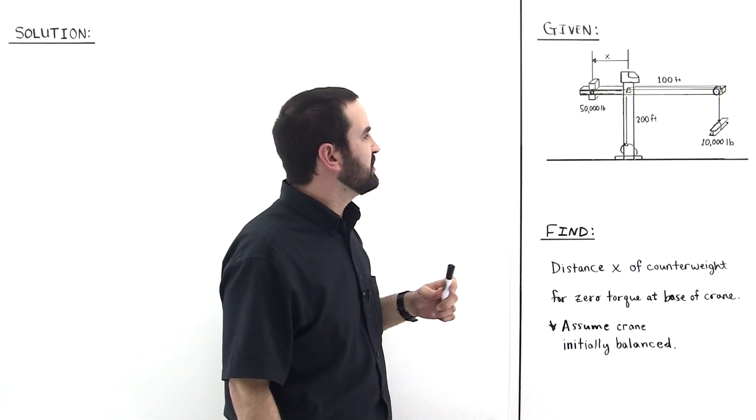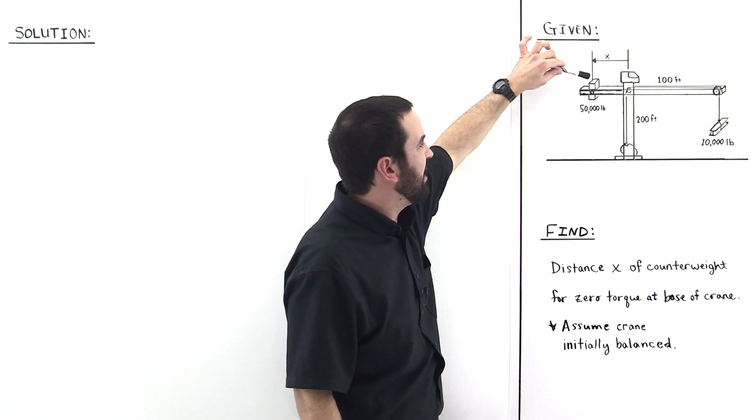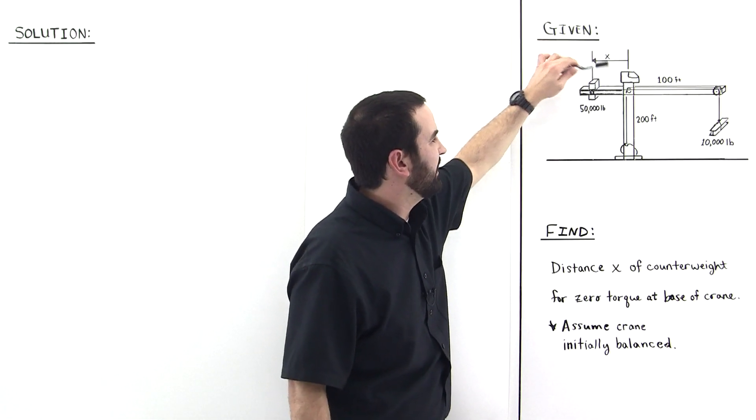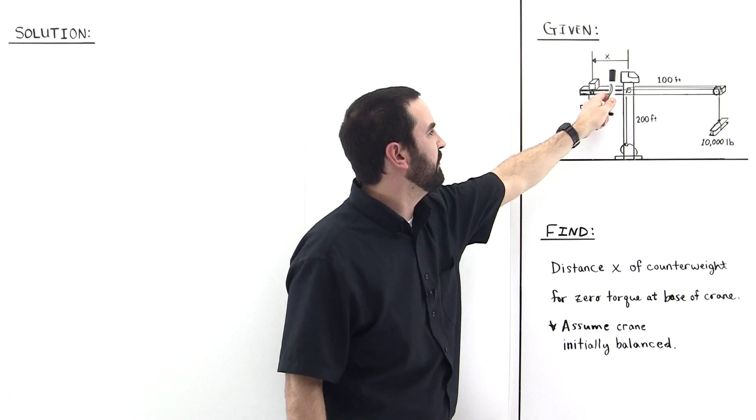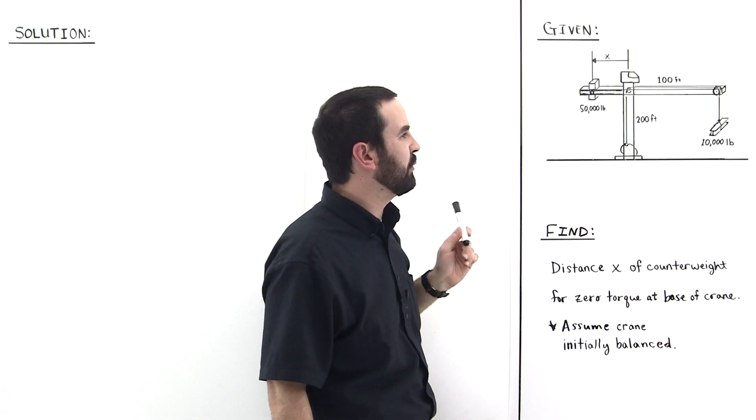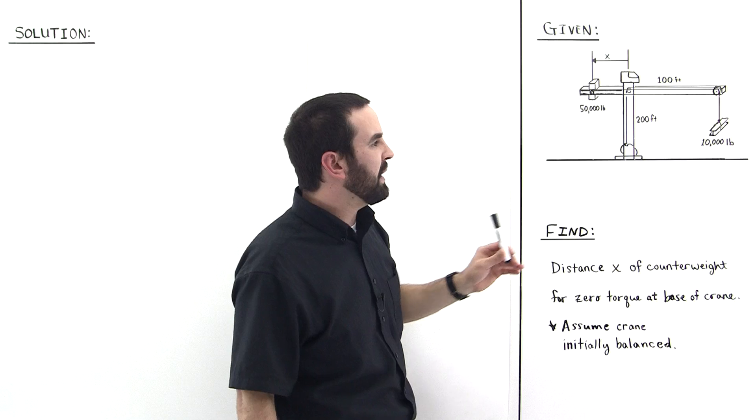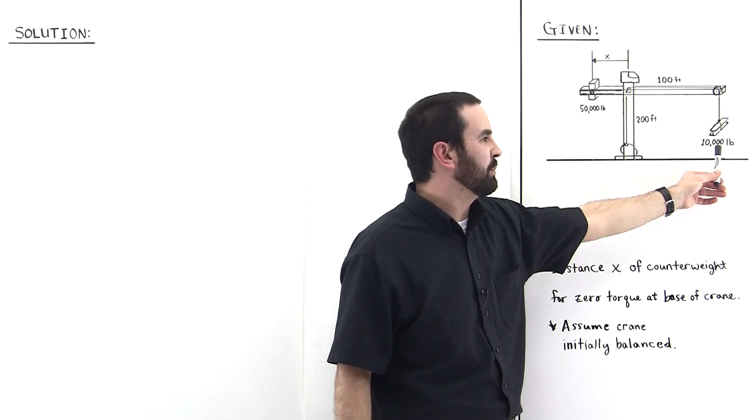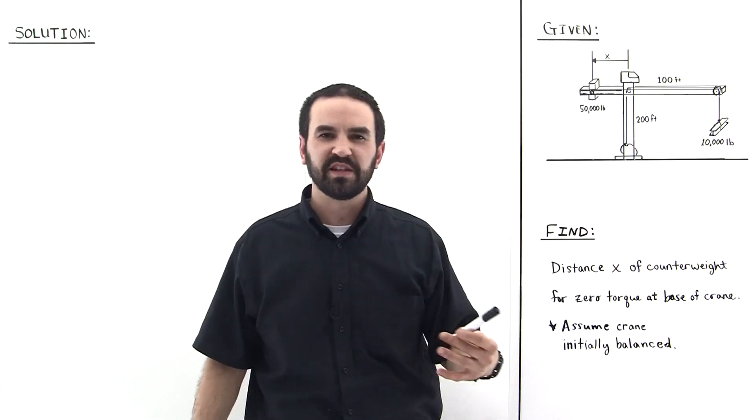So an engineer years ago said if we take this counterweight and we put it on a track, then we can adjust how far away from the spine of the crane we want the counterweight to be, so that we can balance any size weight that we want to put over here, within reason of course.